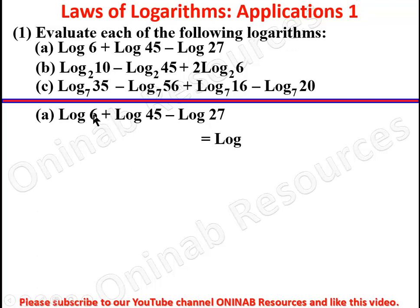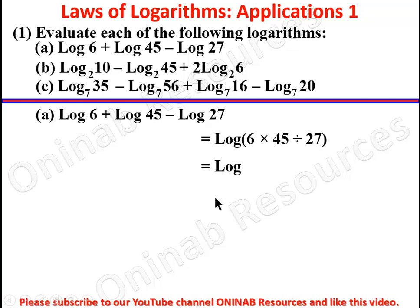Since we are adding, we multiply: the first number is 6, multiplied by 45. Since this is subtraction, we divide by 27. So 6 times 45 is 270, divided by 27 gives 10. We have log 10 to base 10, and log 10 to base 10 equals 1. The logarithm of a number to its own base is 1, so our final answer is 1.